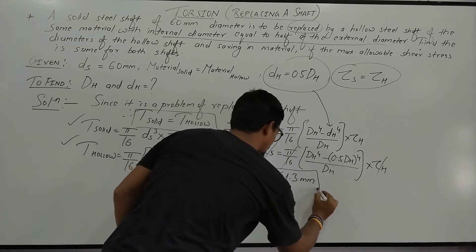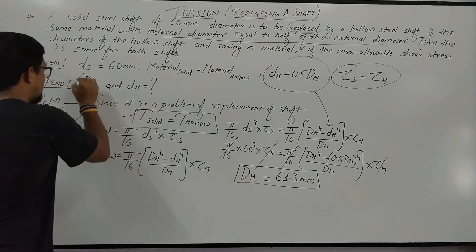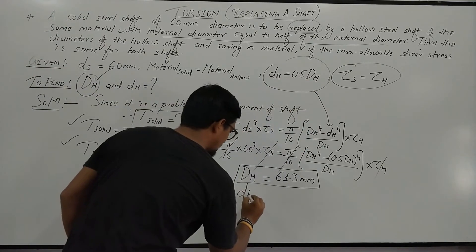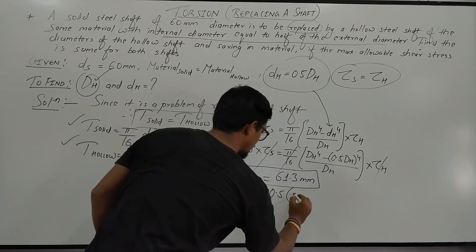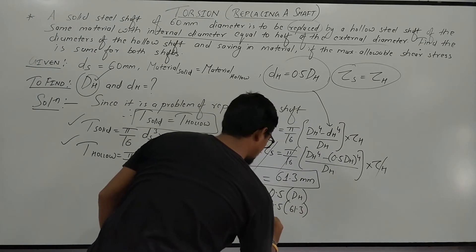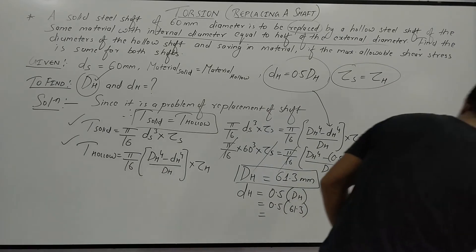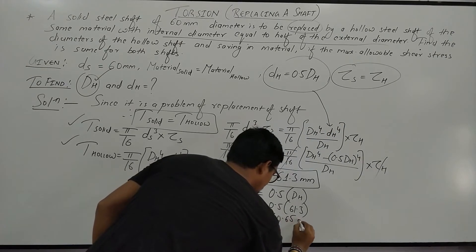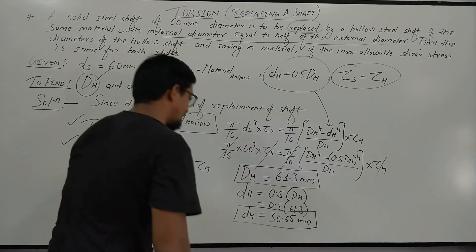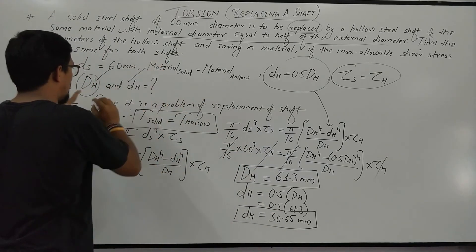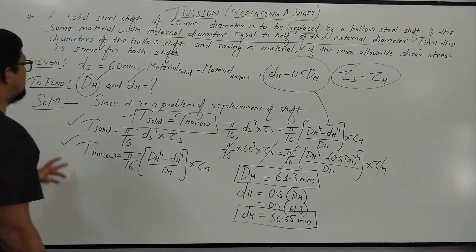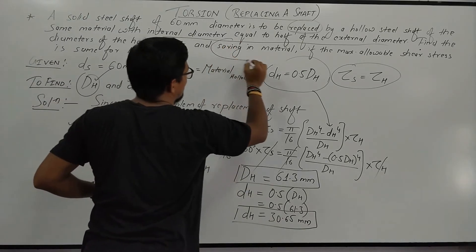So the external diameter of the hollow shaft is 61.3 mm. The internal diameter of the hollow shaft is half of the external diameter, so dh = 0.5 × 61.3 = 30.65 mm. The first part of the problem — finding the diameters — is now complete.